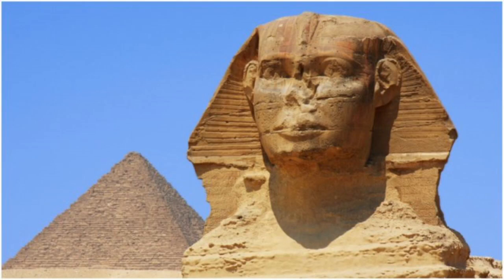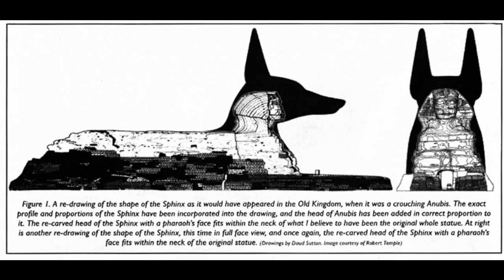I noticed a video on a channel by a user named cfaps7865 that caught my eye. It was his theory, which I think he adapted from Robert Temple's theory, about how the Great Sphinx of Giza was originally Anubis. I want to preface this by saying that I'm not opposed to the theory that the Sphinx's head was re-carved.